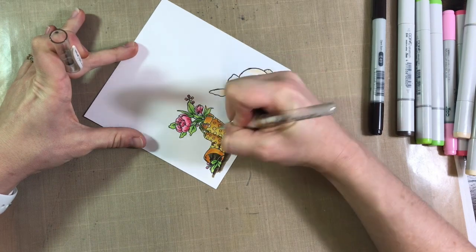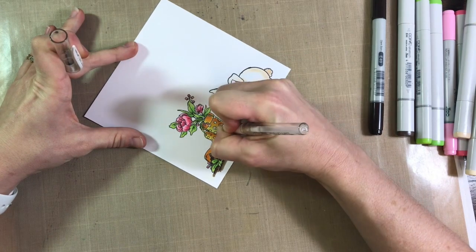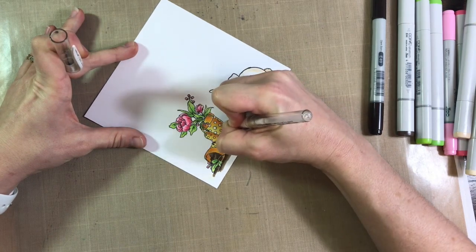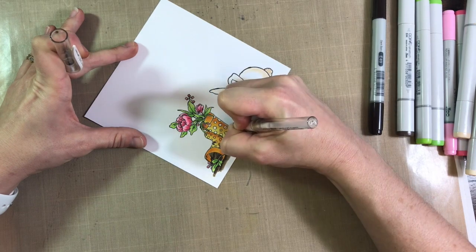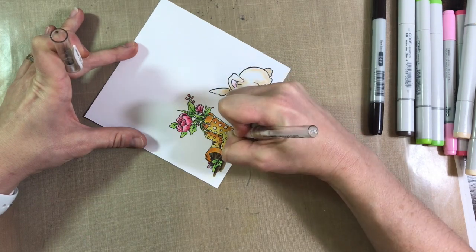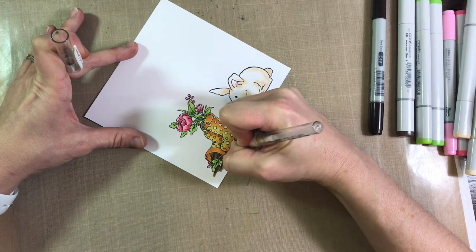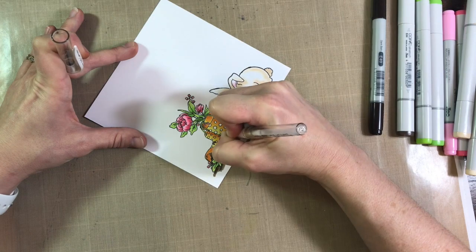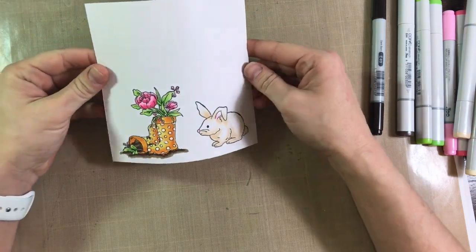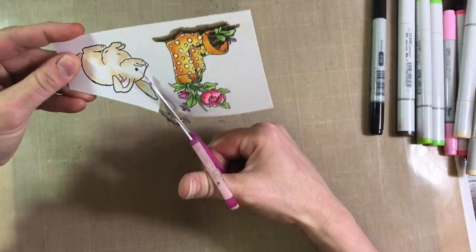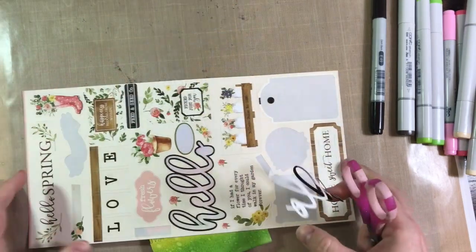And now I've grabbed my white gel pen. And that's the Uniball Signo white gel pen. You're just filling in all those dots. Give it some highlights. And there they are. And then I will fussy cut them out, leaving a small border.